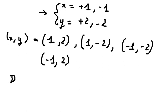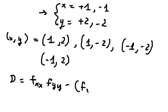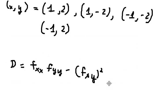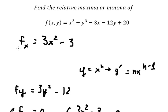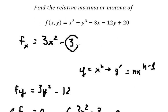To answer the next part, we need to find D, which is the second derivative test. We have D equals Fxx times Fyy minus (Fxy) squared. So we need to find Fxx, Fyy, and Fxy. We take the second derivative of Fx in terms of X, the second derivative of Fy in terms of Y, and Fxy. Fxy is a constant so it gives zero.